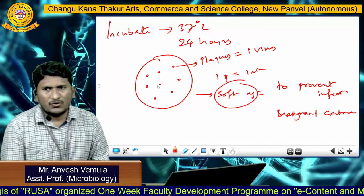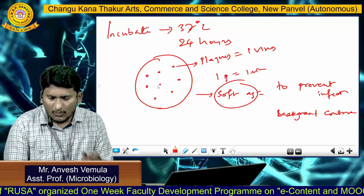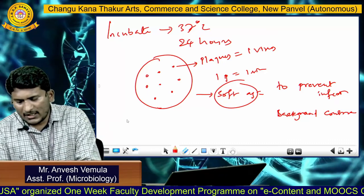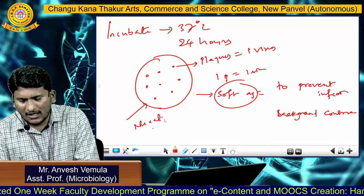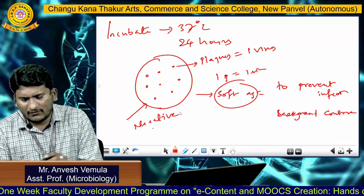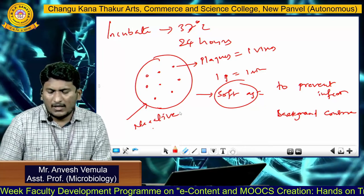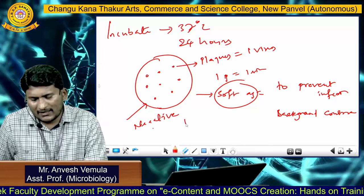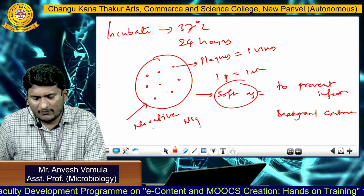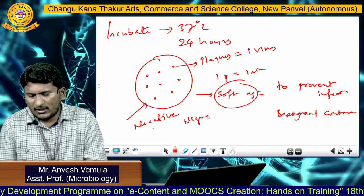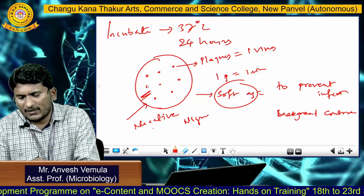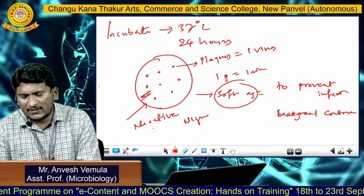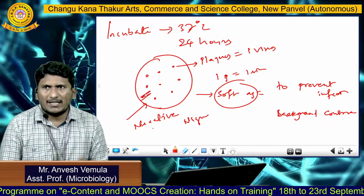If you want to visualize the plaques more clearly, you can use a negative staining technique where you impart various types of dyes like nigrosin to stain the background, making the plaques very clear.